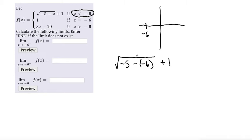So when we simplify, I was getting ahead of myself, minus a negative is the same thing as plus a positive. So -5 plus 6 gives us positive 1 and the square root of 1 is just 1. So this would be 1 plus 1, which is equal to 2. So that would be our limit as x approaches -6 from the left.